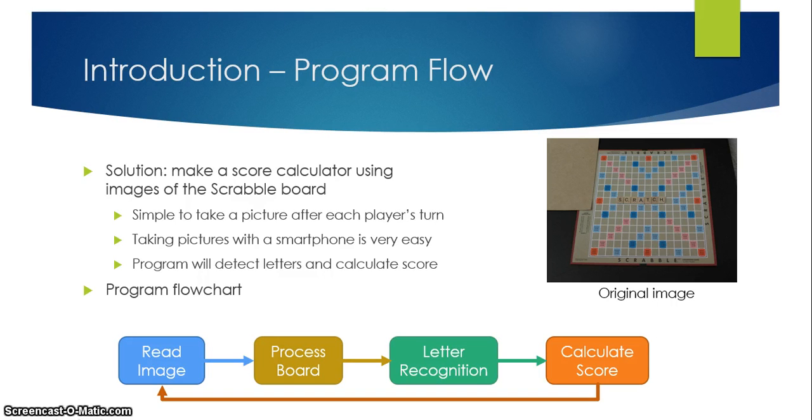So now here you can see the program flow chart. You first read the image, one image at a time. You then process the board which means that you prepare the board for letter recognition. Once it's done you can then perform letter recognition and then you can calculate the score. So let's take a closer look on how this program actually performs this flow.